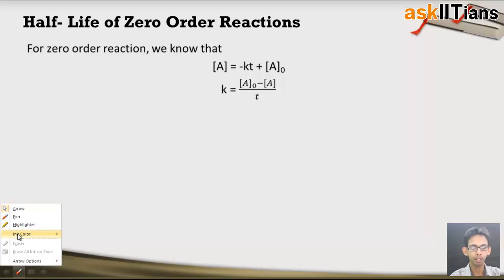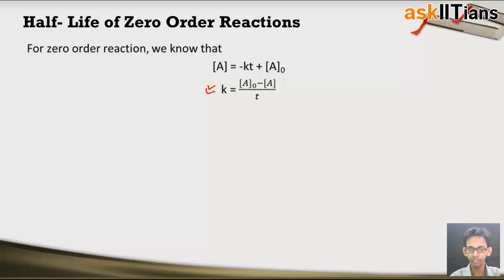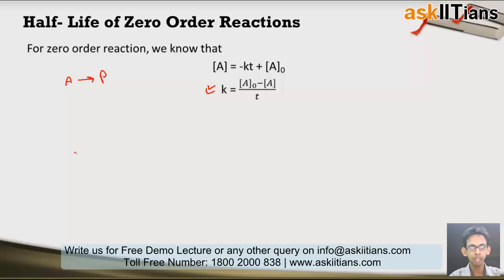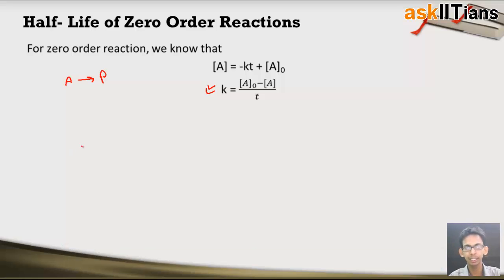The next topic is the half life of a zero order reaction. We have seen the integrated rate law for the hypothetical reaction in which reactant A forms product P. Half life of a zero order reaction — or half life of any reaction — is the time after which the concentration of the reactant decreases to half of its initial value.